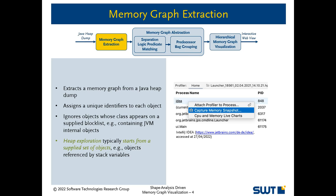In the first step, we extract a memory graph from a Java heap dump and assign each object a unique identifier. Note that we typically do not consider the complete heap relevant for further analysis and only consider a fragment. A user may provide a list of to-be-ignored class names or supply a set of objects from which heap exploration is started. Typically, one would ignore JVM internal objects and start exploration from objects referenced by stack variables.